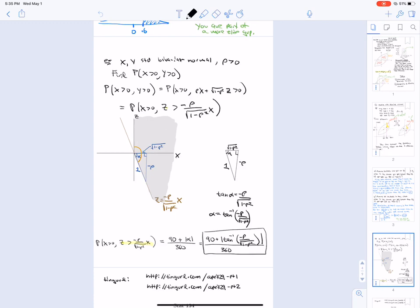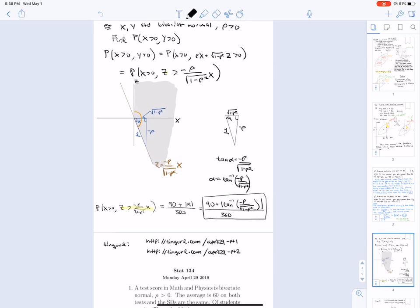So x, z, the joint normal distribution of x, z is radially symmetric. And so what we're looking for is the proportion of the plane that's shaded over the entire plane. In other words, the angle in orange that I've written in orange here divided by 360 degrees. That will be the proportion of the plane that's shaded.